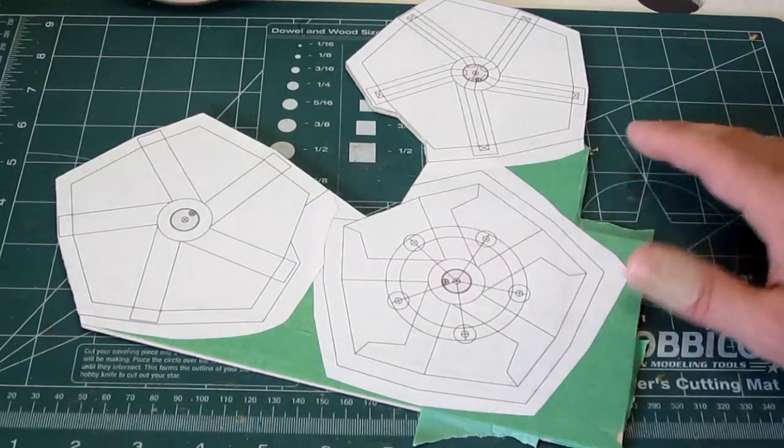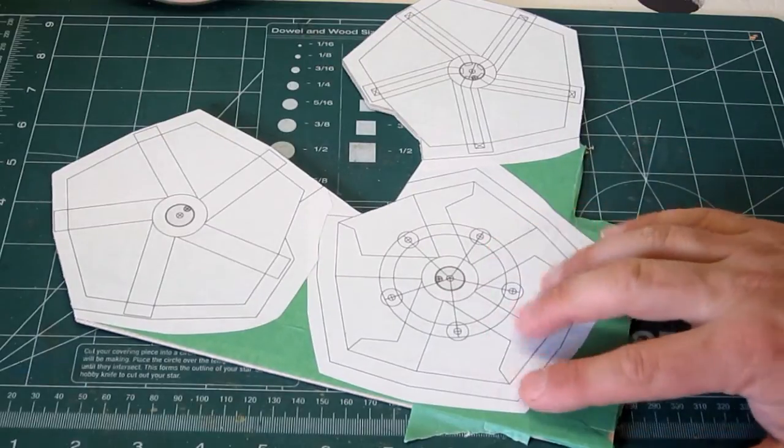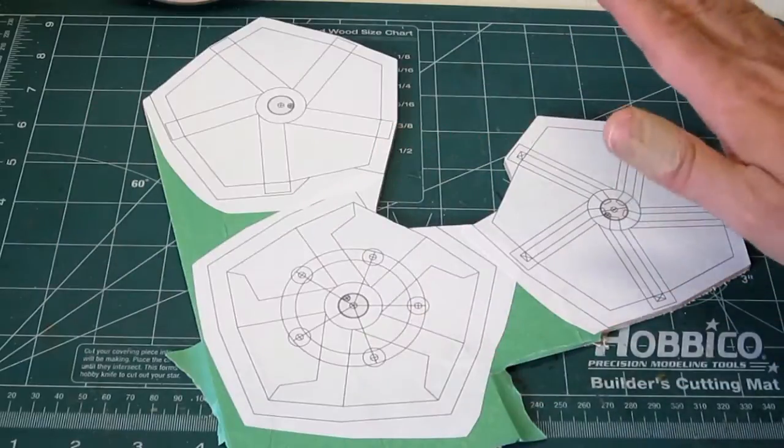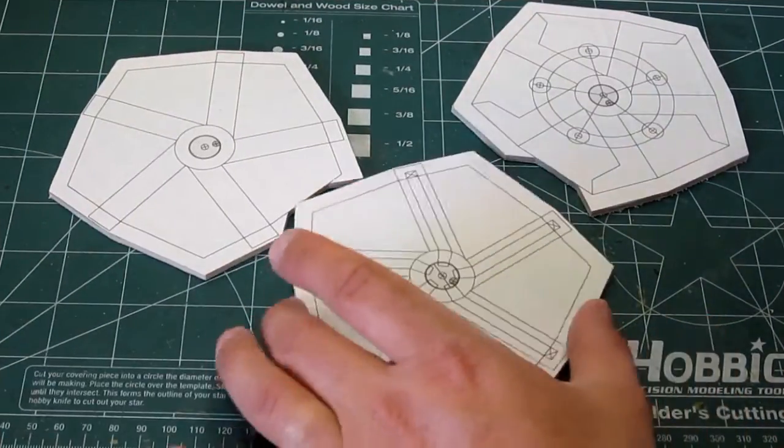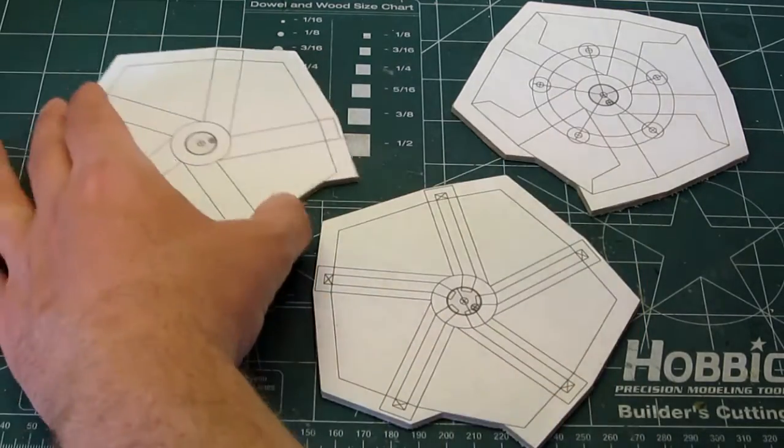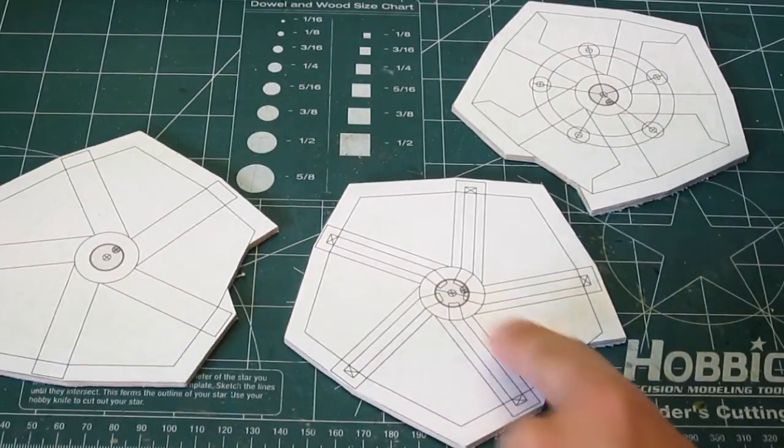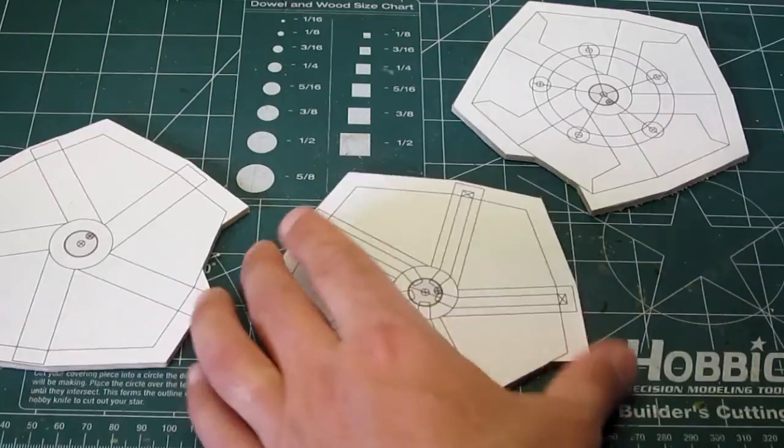I'm calling it the PentaBello because it will be driven by five bellows. Here I have attached the pattern for the bellow support frame and air delivery system to 1/8 inch Baltic birch plywood. Once you cut these pieces out, I'm going to cut out the interior channels which will end up being channels that deliver air to the bellows.